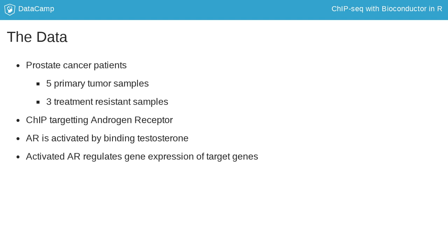Throughout this course, you will explore one particular ChIP-seq dataset. This data consists of samples taken from patients with prostate cancer and falls into two groups. The first group consists of five primary tumor samples, while the second contains three samples from tumors that have become treatment resistant. Chromatin immunoprecipitation targeting the androgen receptor was carried out for all samples. The androgen receptor is activated by binding testosterone and is then capable of binding to specific parts of the genome to regulate gene expression.